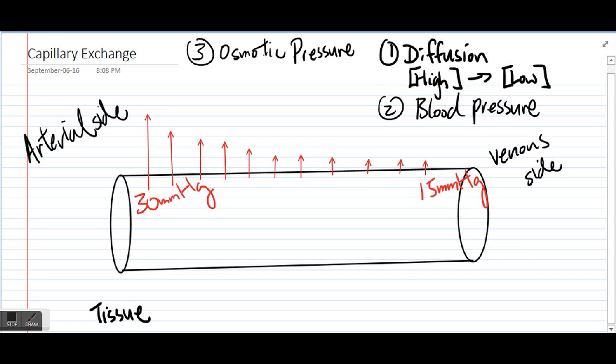What kind of solute do we normally find in blood? There are proteins, there are electrolytes such as sodium, potassium, so on and so forth. And all these things are going to cause fluid to be drawn into your capillaries.